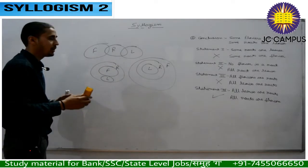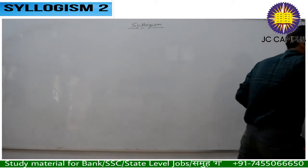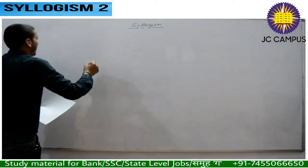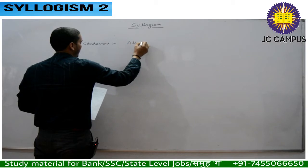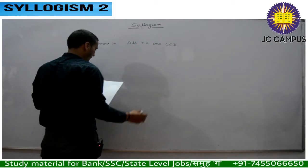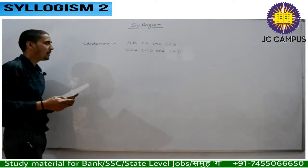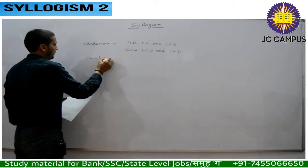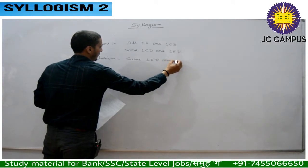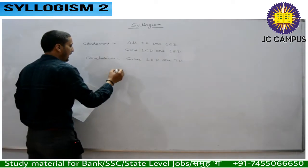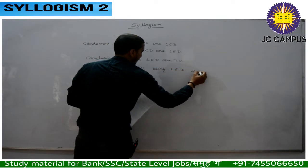The next type of question is possibility cases. One or two questions on possibility appear in exams. For example, the statement given is: all TVs are LCD; second, some LCDs are LED. Conclusion 1: some LEDs are TV. Conclusion 2: all TVs being LED is a possibility.